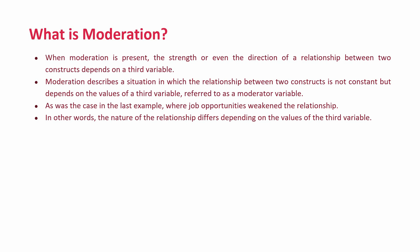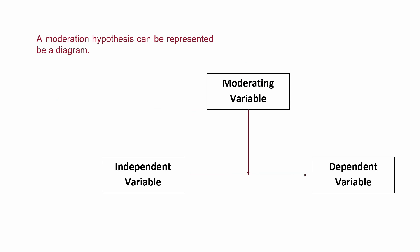In other words, the nature of the relationship differs depending on the values of the third variable. This is how we can represent the relationship of the moderating variable between the independent variable and dependent variable through a diagrammatic view — the moderating variable influences the already present relationship between the independent variable and dependent variable.